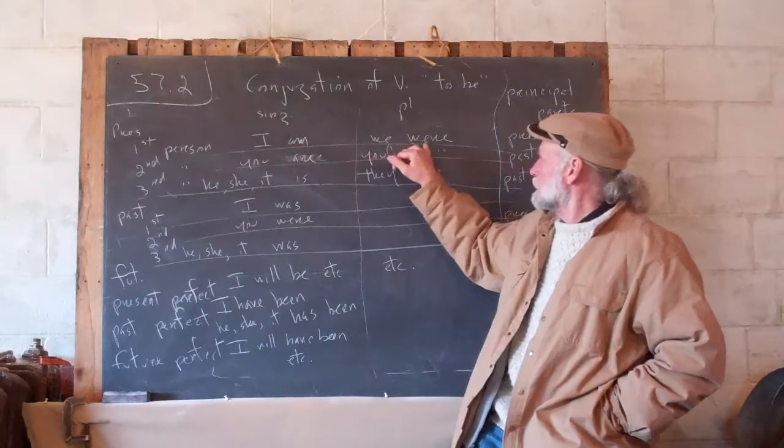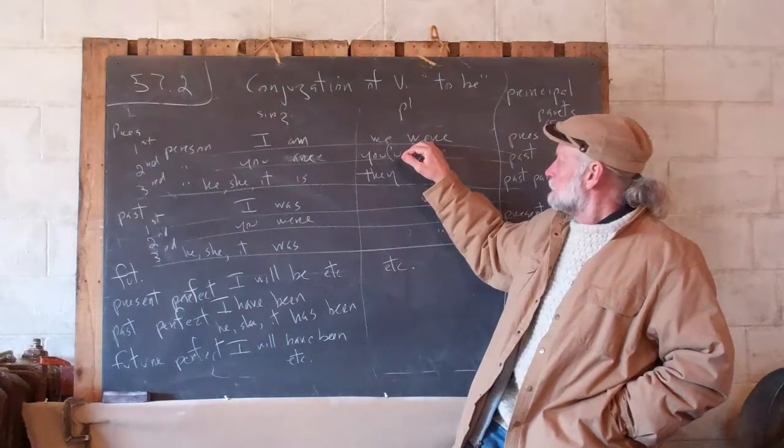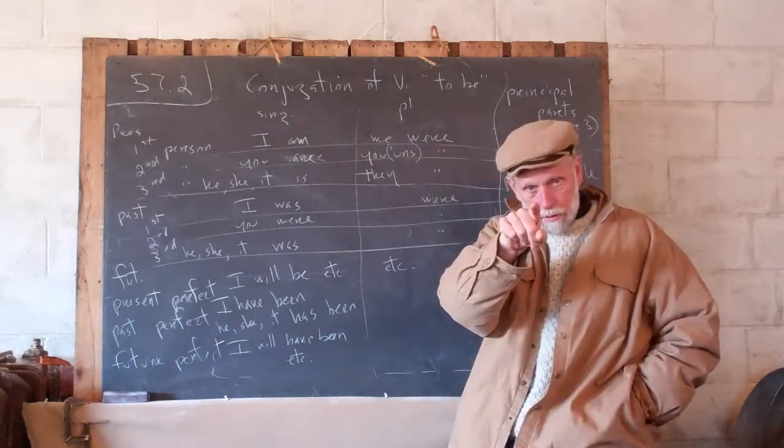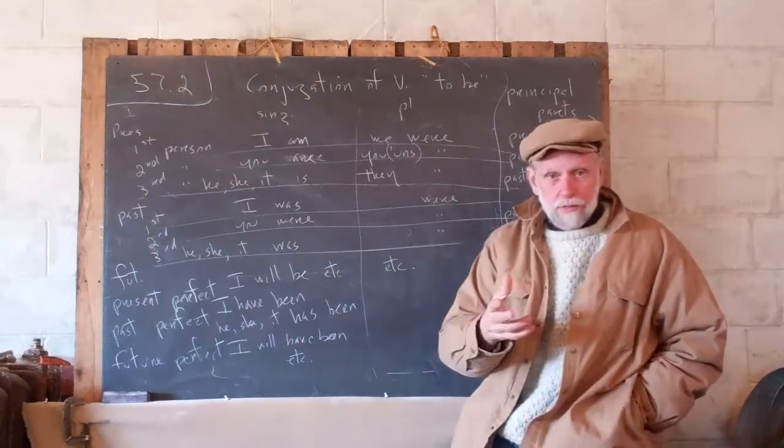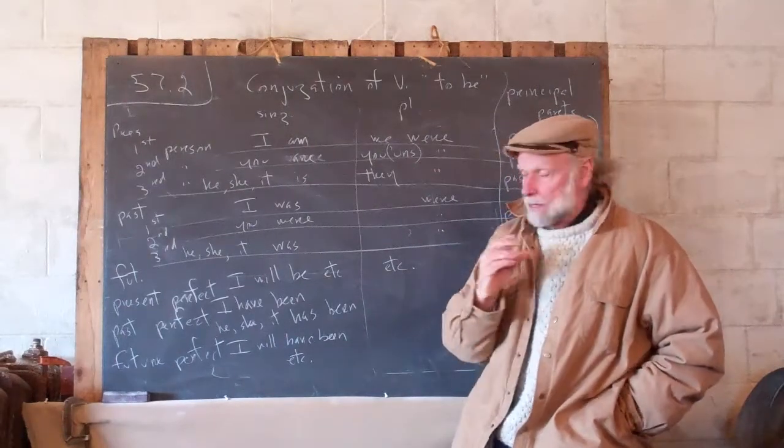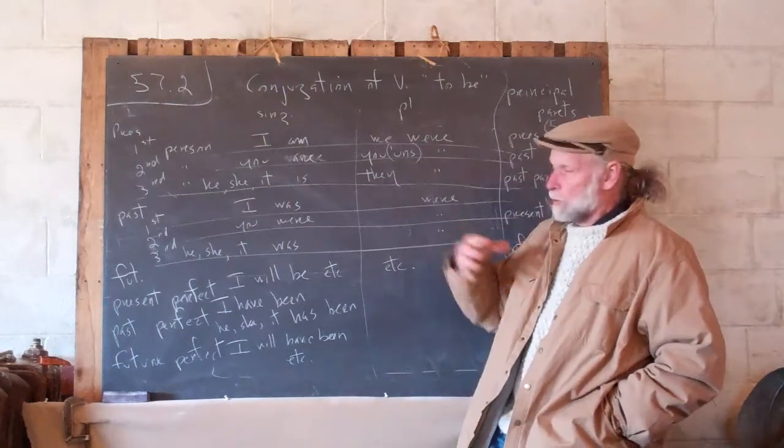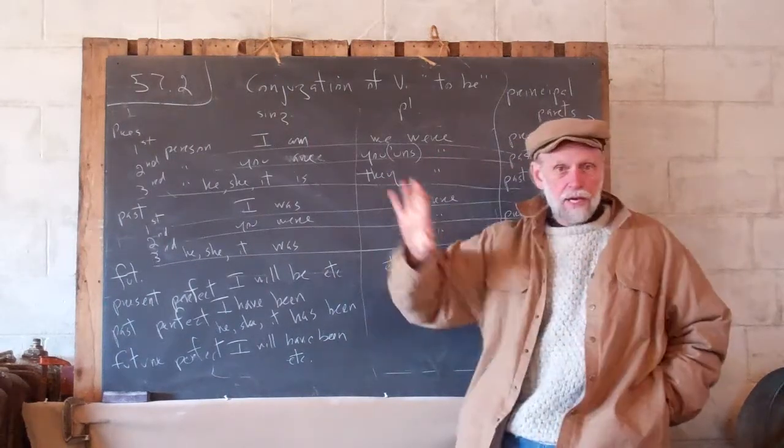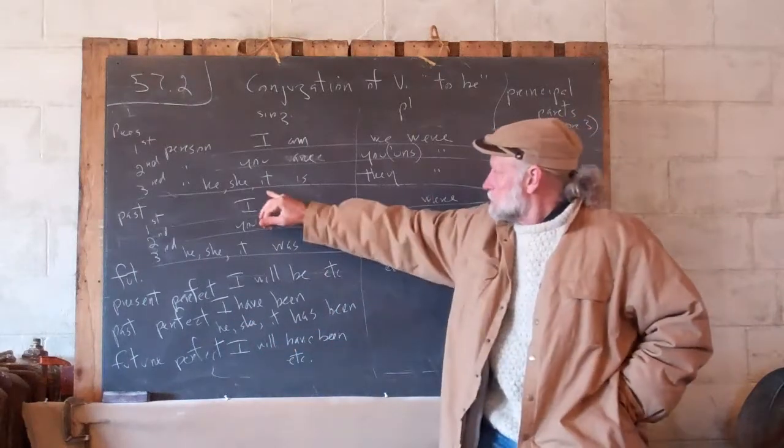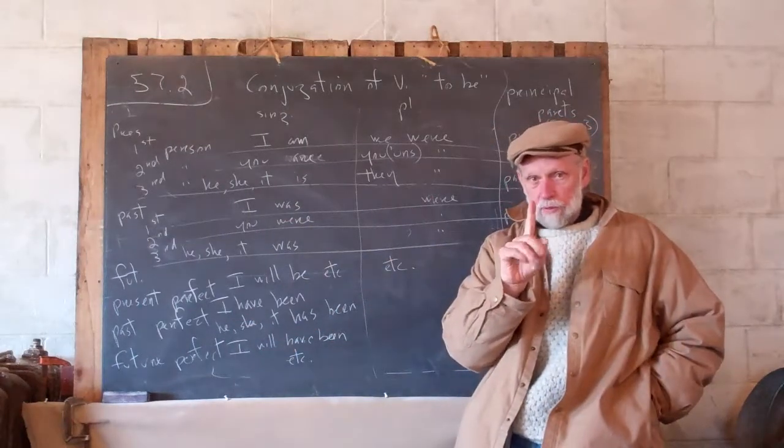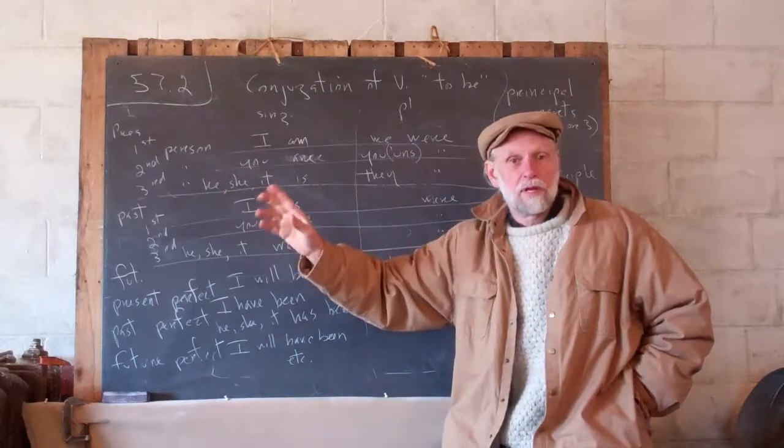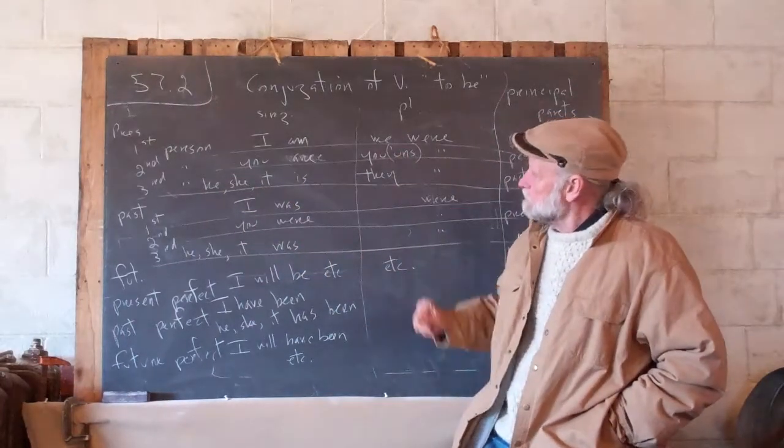but it's not we am, uh-uh, it changes to we were. You were, if it's yuns, as in dialect here, we would say yuns were, yuns were there. That's plural, it's still were, and they, gender has now disappeared and it's become just a plural pronoun, third person, they, they were. All right, that's the first, present tense.